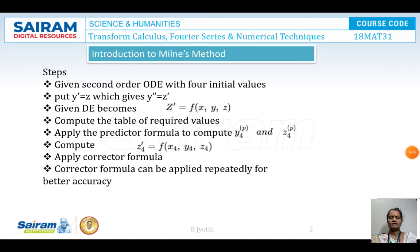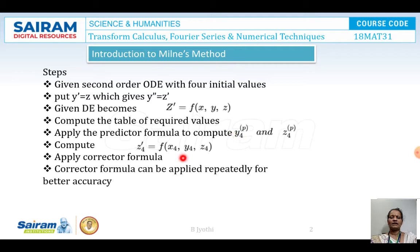So the introduction: given a differential equation of second order with the four initial conditions, put y-dash equals z, which gives y-double-dash equals z-dash, and the given differential equation becomes z-dash equals f(x, y, z). Compute the table of required values. Apply the predictor formulae to compute y4(p) and z4(p), also compute z4-dash equals f(x4, y4, z4) from the predictor formula, and apply the corrector formula. This corrector formula can be applied repeatedly for better accuracy — usually at least two times.